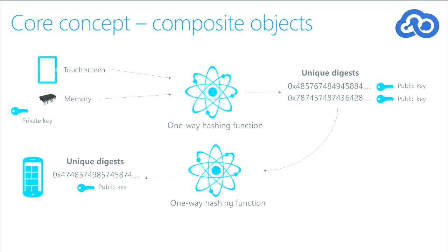We could do that for one device or one human or one object in the world, but we could also start to combine these. If we're talking about a phone, it has a touch screen and some memory — many components inside. Each of those is unique. When we get that memory chip, there's a serial number and a GUID from that manufacturer. The touch screen is the same way. When we combine those together, we actually create another unique device, because we're going to ultimately create a phone that will have a serial number and a GUID mapping to a unique object in the world. We can take those digests and run them through a hashing algorithm to get another unique hash.